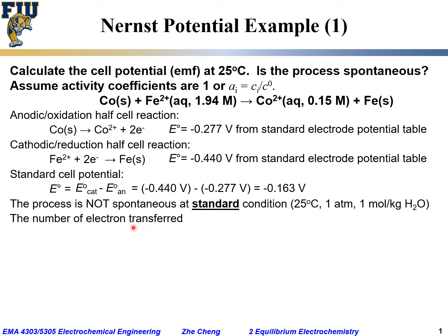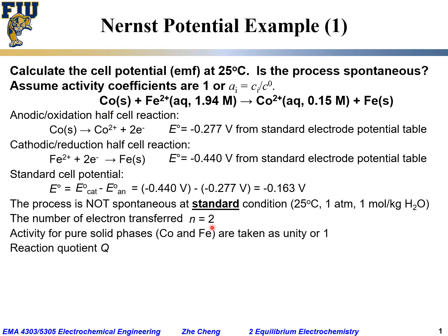The number of electrons transferred in this process: cobalt gives out two electrons, while iron 2+ also combines with two electrons. So the number of electrons transferred in this overall electrochemical reaction is n = 2. The activity for pure solid cobalt and pure solid iron are taken as unity — that's standard practice for simplicity.